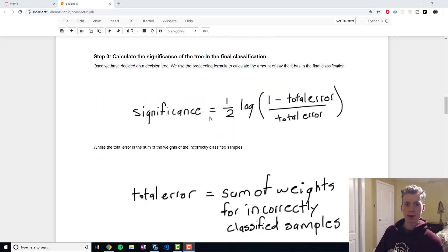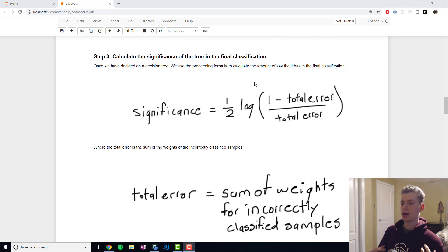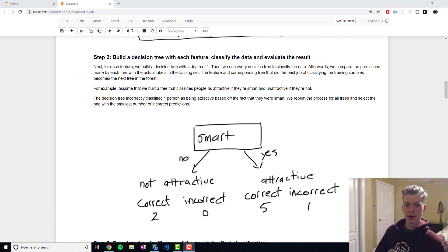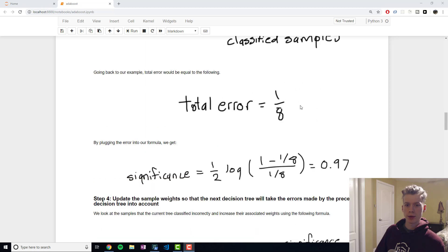The next step is to calculate the significance of this tree right here. By significance, I mean how much of an impact will it have on the final prediction made by the ensemble as a whole. The formula for significance is the log of one minus the total error divided by the total error, and then divided by two. The total error is the sum of the weights of the incorrectly classified samples. Here we have one sample that was incorrect, and since each sample has a sample weight of one over eight, our total error is going to be one over eight. Once we plug that into the formula we get 0.97.